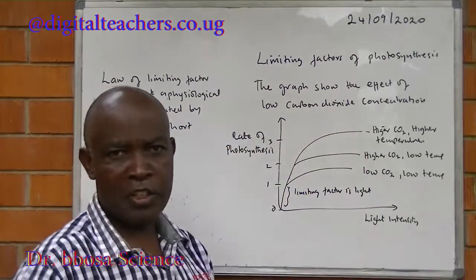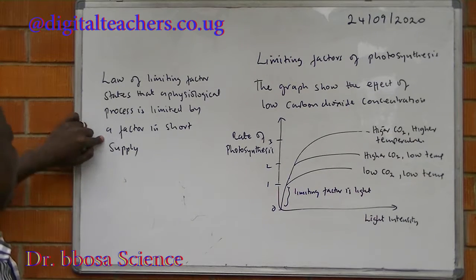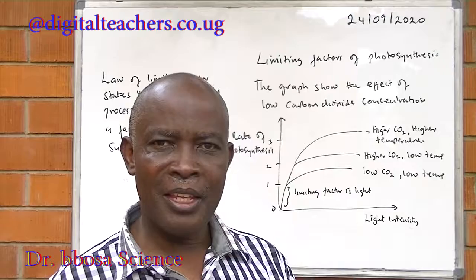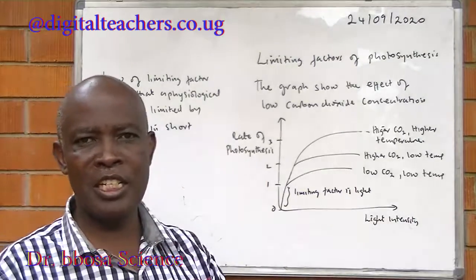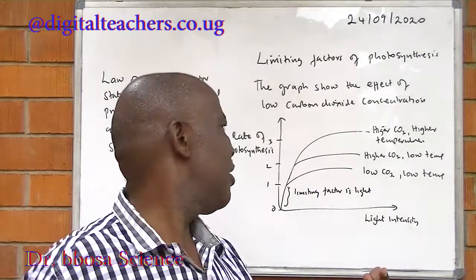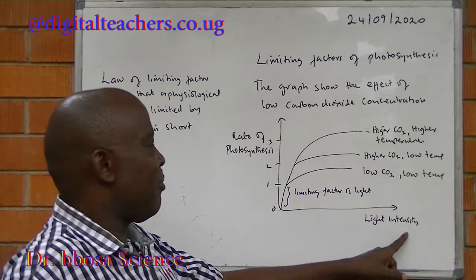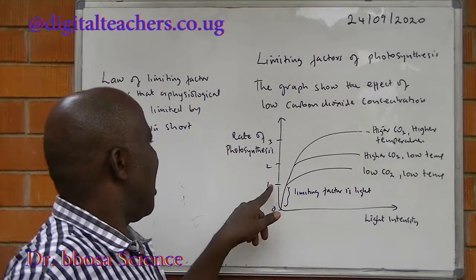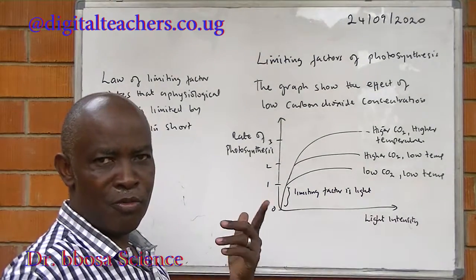Limiting factors of photosynthesis. The law of limiting factors states that a physiological process is limited by a factor in short supply. We can tell that a factor is in short supply when we increase its concentration and the rate increases. When we increase its concentration and the rate does not change, then it is no longer a limiting factor. On the graph between 0 and 1, light is the limiting factor because increasing the amount of light increases the rate of photosynthesis. After point 1, light ceases to be a limiting factor.